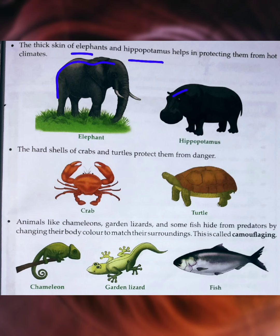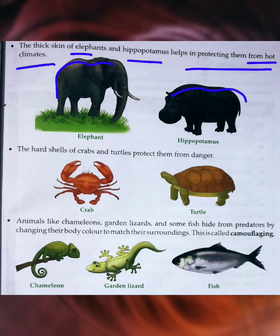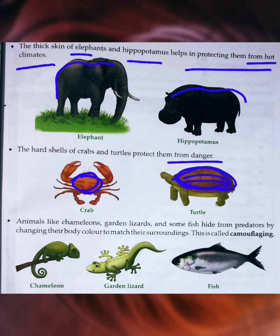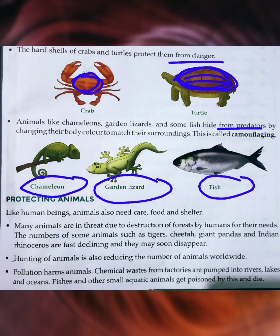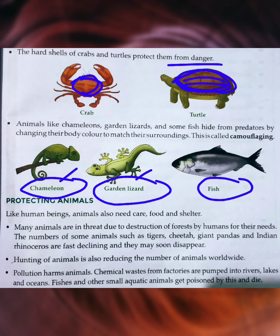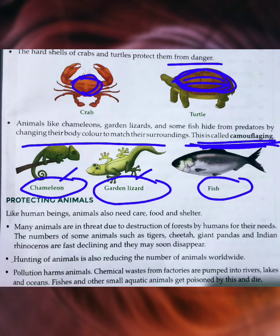Elephant and hippopotamus have very thick skin that helps protect them from hot climate. Crabs and turtles have hard shells on the upper part of their body which protect them from dangers. Some animals like chameleon and garden lizard, and even some fishes, can hide from predators by changing their body color to match their surroundings — this is called camouflage.